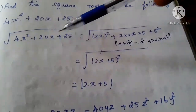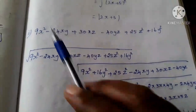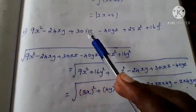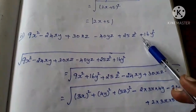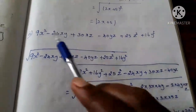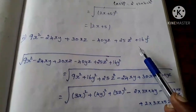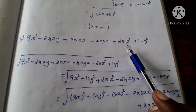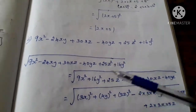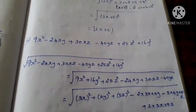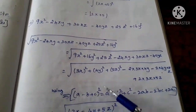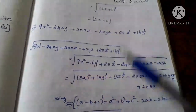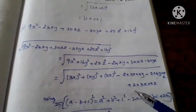So the square root of 4x² + 20x + 25 is 2x + 5. Next we will see the second question: 9x² − 24xy + 30xz − 40yz + 25z² + 16y². This is a very long polynomial. When three variables are present, we have to use the three-variable formula, which is (a − b + c)². So when you see three variables, remember the three-variable formula and apply that.